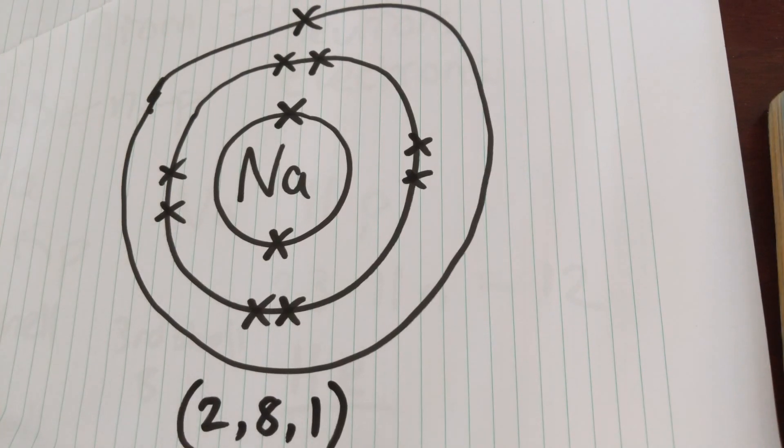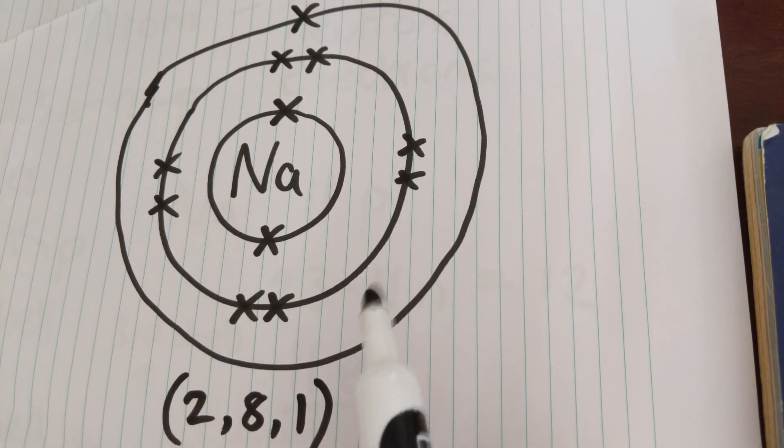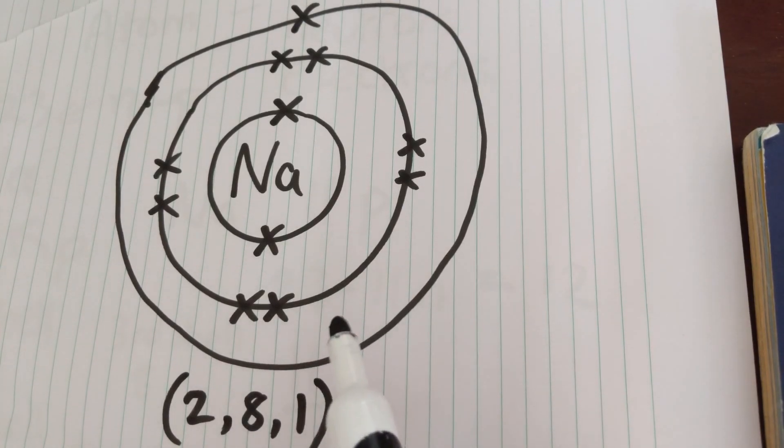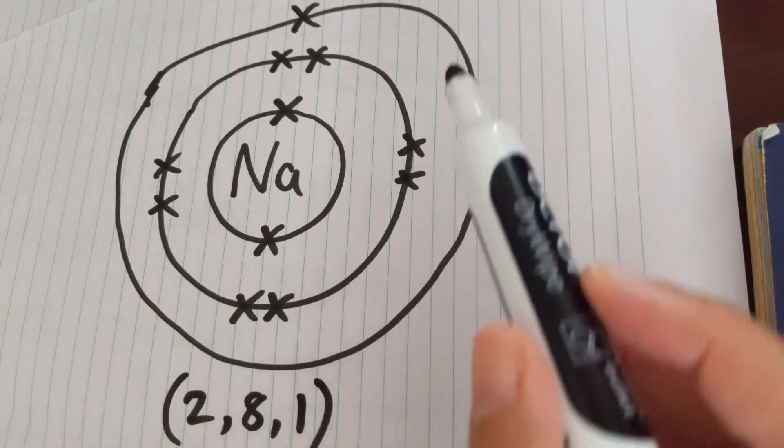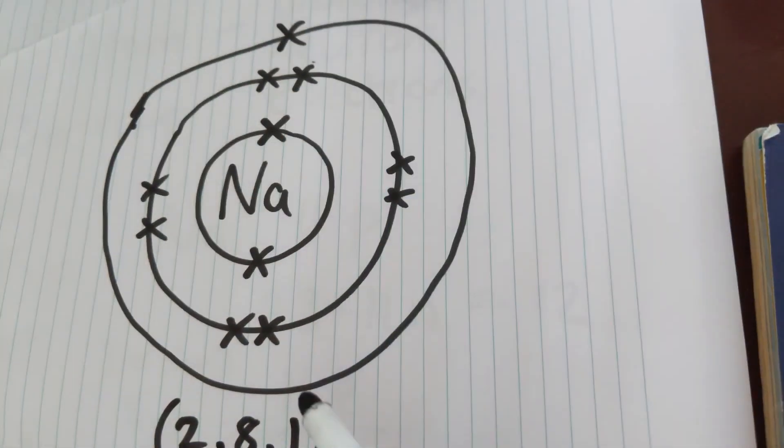So there are a couple of things we know from this. So first off, that in order for sodium to take part in a reaction, the easiest thing for it to do is lose this electron, its outer shell electron.